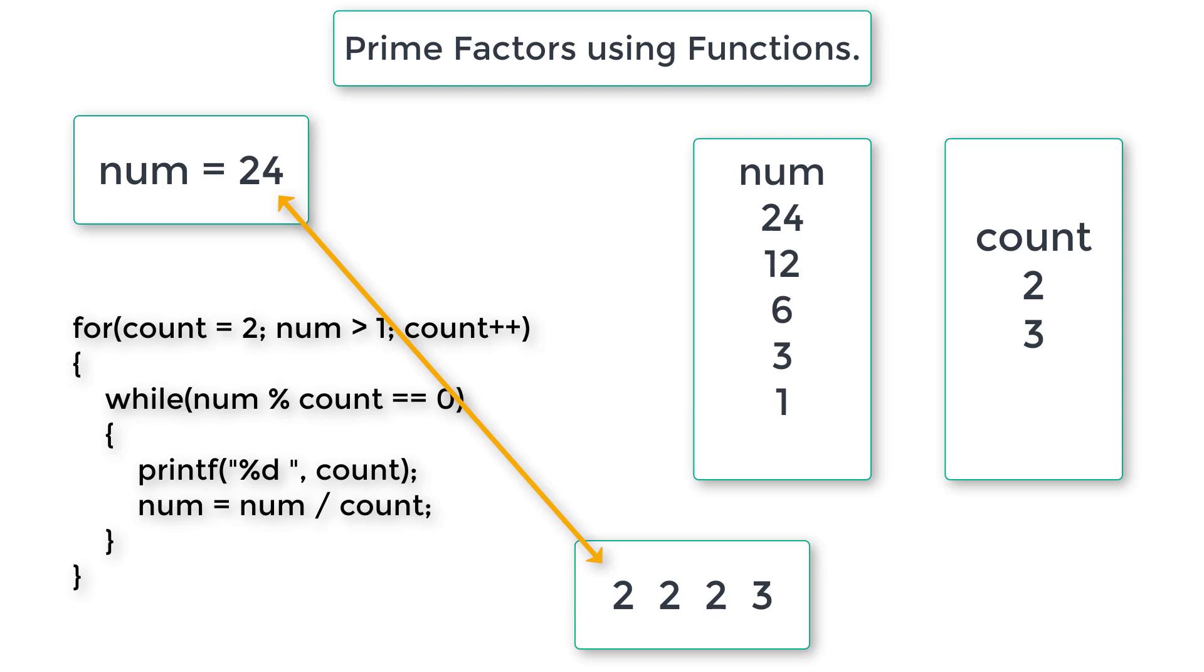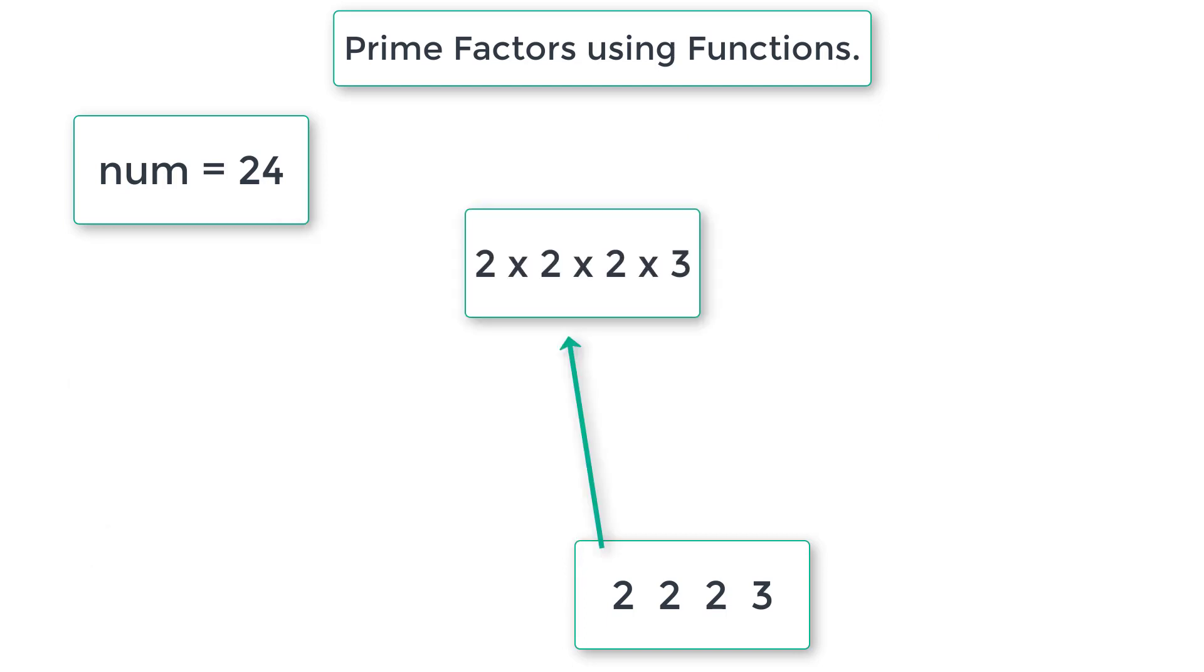So we get the prime factors 2, 2, 2 and 3. Multiply all these numbers 2 into 2 into 2 into 3 which is equal to 24. So prime factors of number 24 is 2, 2, 2 and 3. Observe this logic. Based on this logic itself, we will be writing our code.